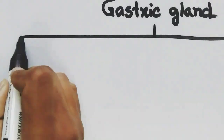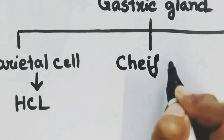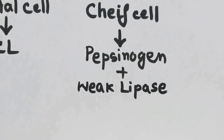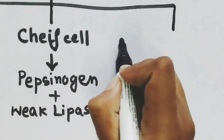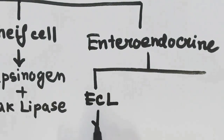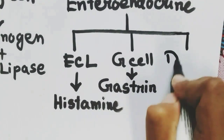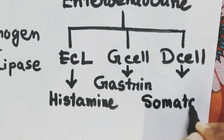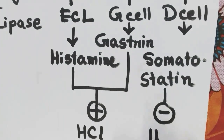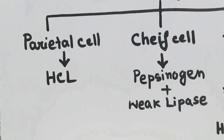In recap, the gastric gland has parietal cells which release HCl; chief cells which release pepsinogen for protein digestion and weak lipase for lipid digestion; and enteroendocrine cells comprising ECL cells releasing histamine, G cells releasing gastrin, and D cells releasing somatostatin. Histamine and gastrin stimulate HCl secretion, while somatostatin inhibits it. There is also the mucus cell which releases mucus to protect the stomach.